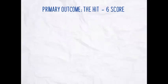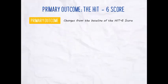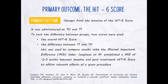Now let's focus on the primary outcome, the HIT-6 score, which was assessed at baseline and at T1. It was administered at these two times and they used two scores to test the difference between groups: the overall HIT-6 score, and the difference between T1 and T0. This second measure was used to compare results with the Minimally Important Difference Index, following an article by Coito et al., which states the MID has to be minus 2.3 points between baseline and post-treatment HIT-6 score for a procedure to have relevant effects.